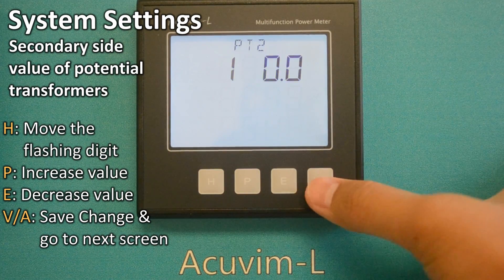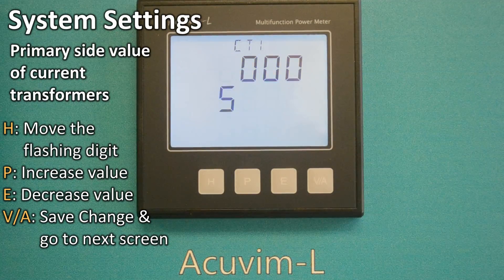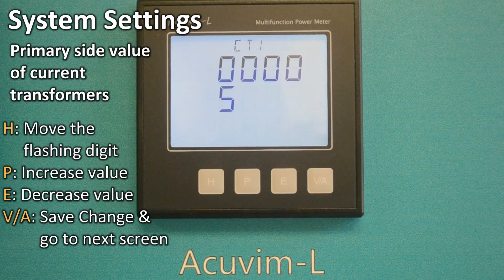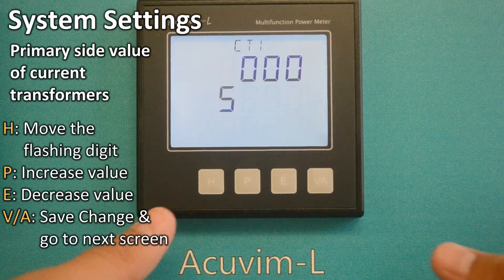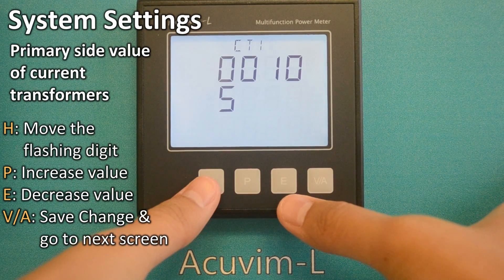CT1 5 amps means the primary side value of the current transformer. If a 100 to 5 amp CT is used, this screen should be 100. Making the change is the exact same process as the PT settings.